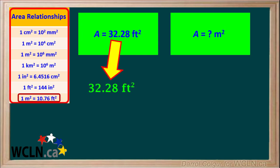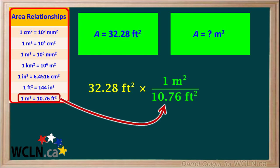We'll start with 32.28 feet squared and multiply it by the conversion factor 1 meter squared over 10.76 feet squared. We can cancel out the units feet squared. And dividing 32.28 by 10.76 gives us 3 meters squared.